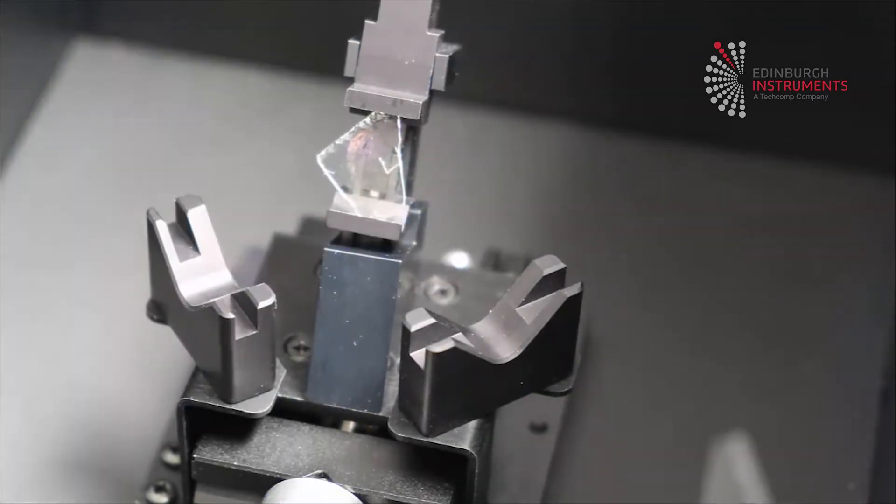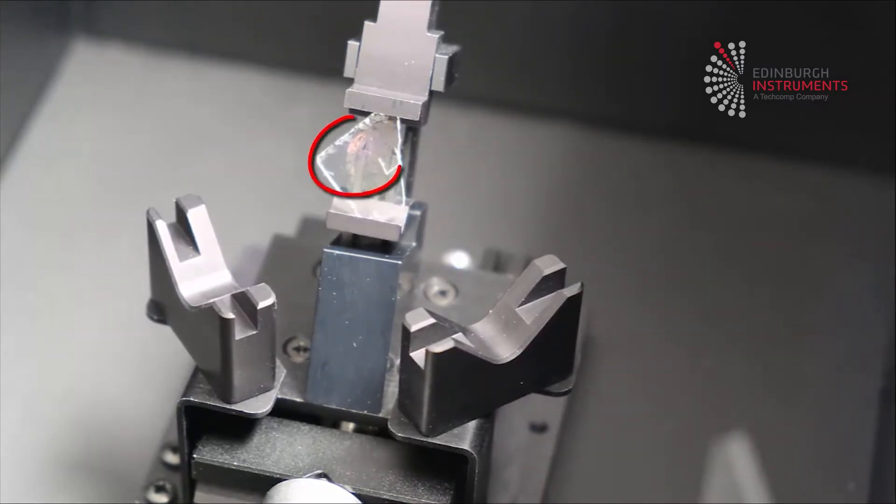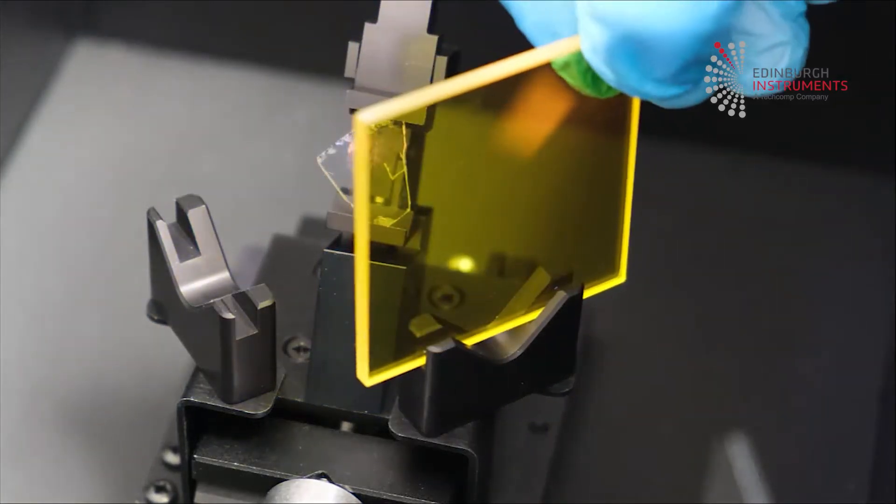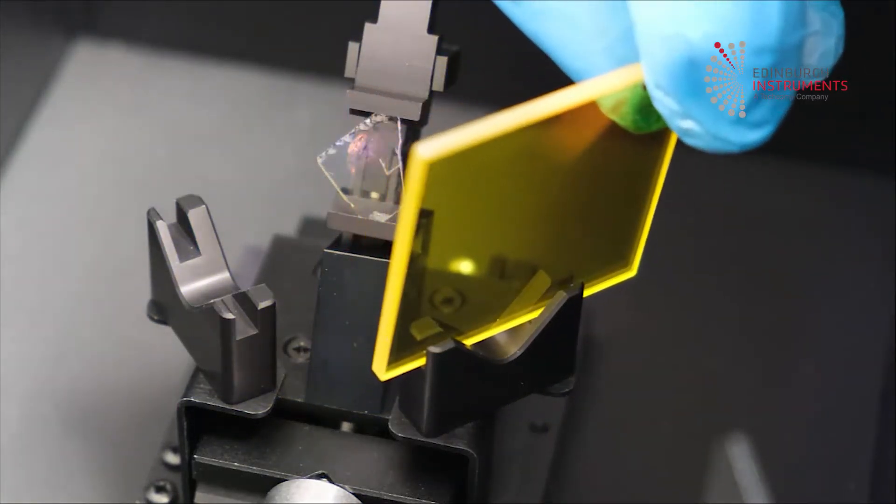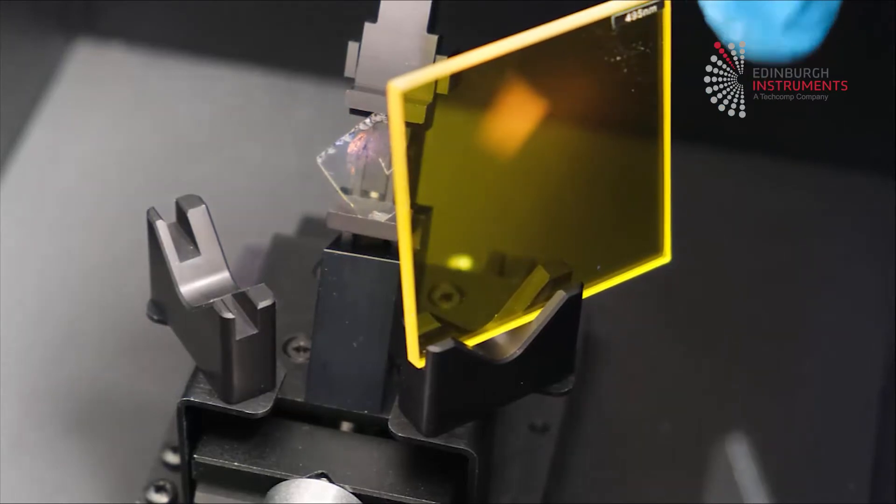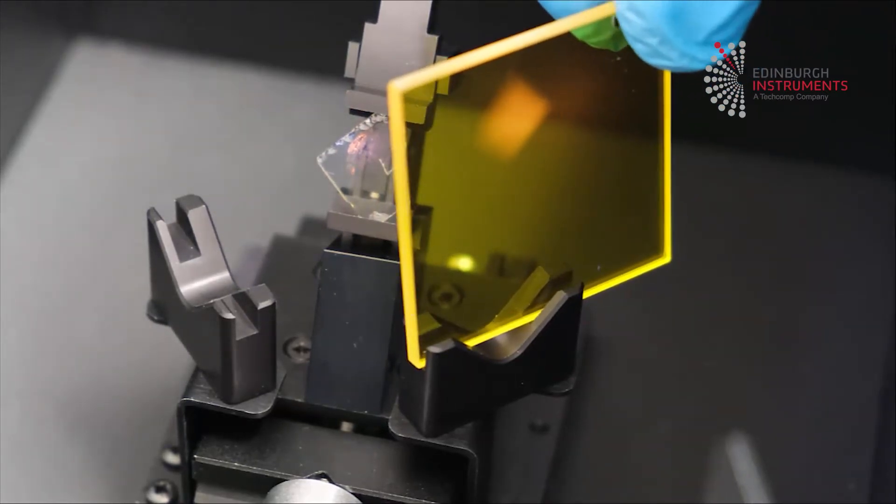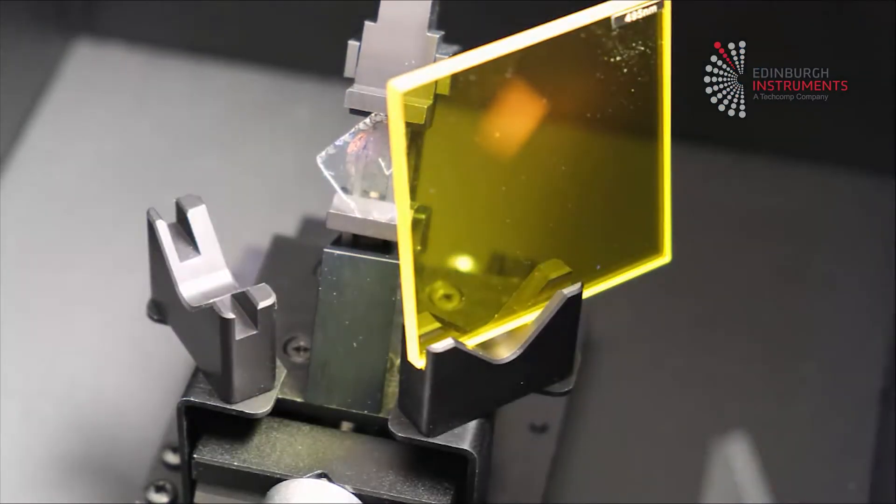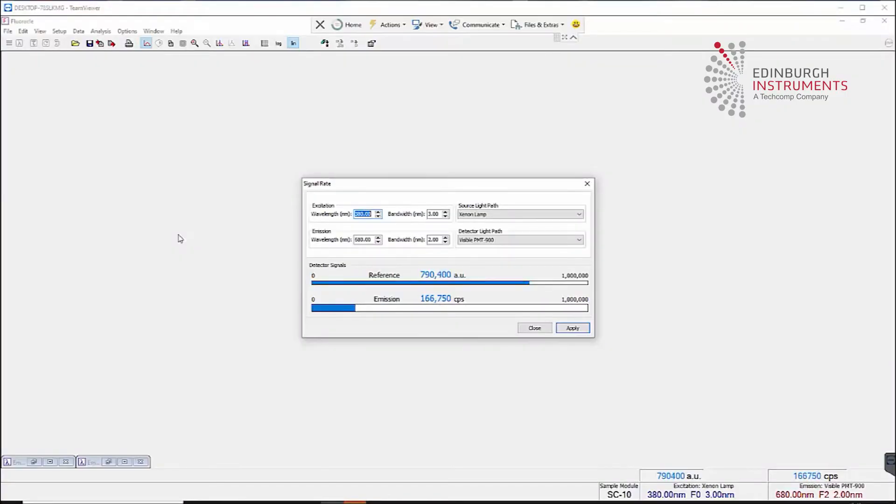We previously discussed alignment. Check that the excitation beam hits the sample by using a visible beam from the xenon lamp. For a laser source, this alignment should also be checked safely. A good tip for an unknown sample is often to excite with a high energy wavelength, say 300 nanometers, and observe the sample carefully with your eye to see if a color can be seen. This would also allow you to make a guess at the emission wavelength.